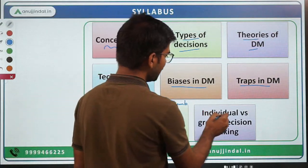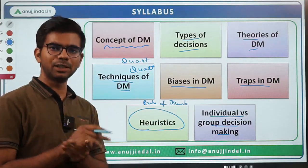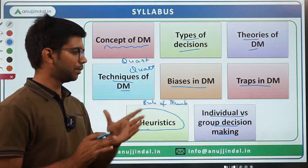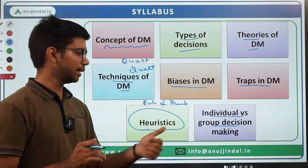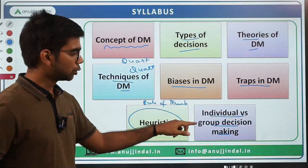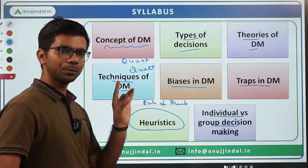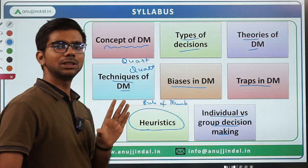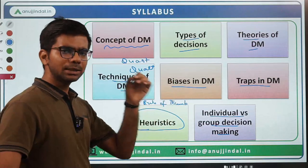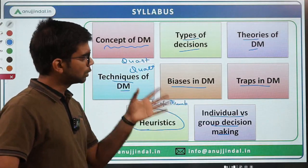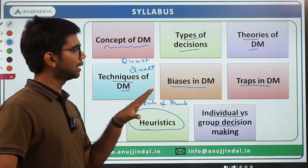Then there is the difference between individual and group decision making. Individual decision making is altogether a different ball game, and group decision making is altogether different. Their techniques can also differ depending upon whether you are taking a decision individually or as a group. There are certain benefits and certain shortcomings of both. This is not an exhaustive list, but questions were mostly from these topics.